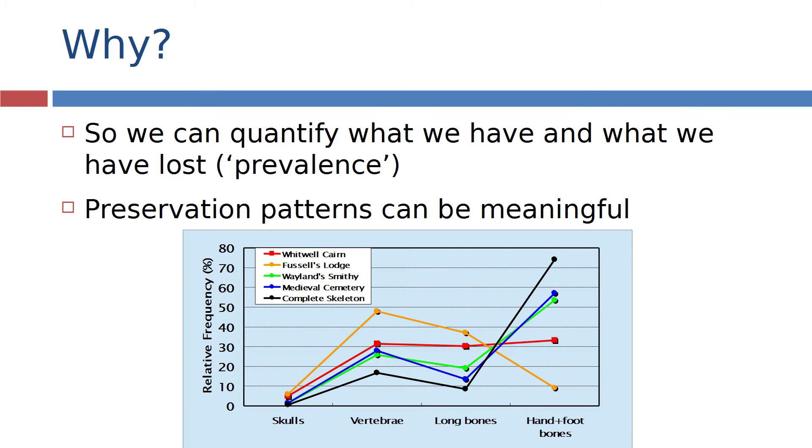If you go to a Neolithic chambered tomb you may find within one of the compartments a pile of commingled human remains. We don't know how many people that represents nor do we know quite how they got there and it is possible to look at the representation of different elements to understand that process and so in this particular study you've got a comparison of the complete skeleton which is marked by the black line. This is what we'd expect from a complete skeleton in terms of the proportions of different parts of the body.